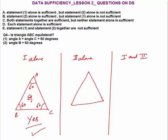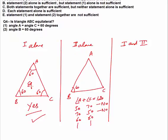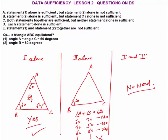Statement 2 alone — forget Statement 1. Angle B = 60°, so A + C must be 120°. But A and C could be 50° and 70°, 70° and 50°, or 60° and 60°, among many cases. When A + C = 50° and 70°, the triangle is not equilateral (answer: no); when A + C = 60° and 60°, it is equilateral (answer: yes). Both yes and no are valid — not a unique answer, so Statement 2 is not sufficient. No need to combine since Statement 1 alone is sufficient. Answer choice: A.